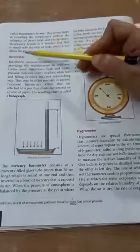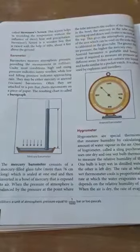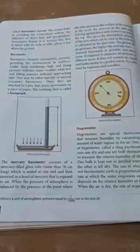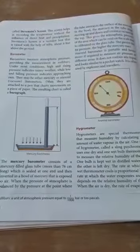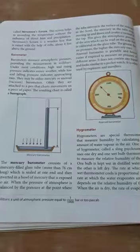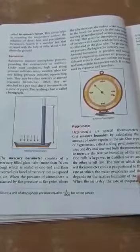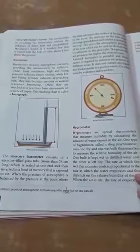Next instrument is barometer. Barometers measure atmospheric pressure providing the measurement in millibars. Under most conditions, high and rising pressure indicates sunny weather, while low and falling pressure indicates approaching rain.